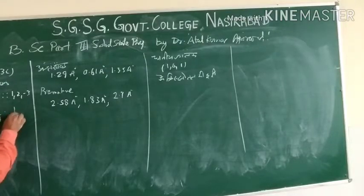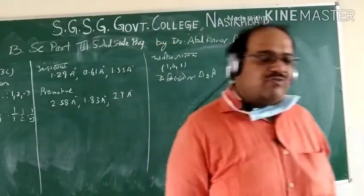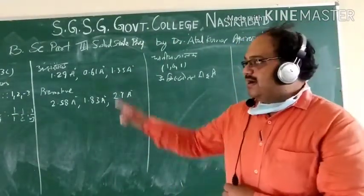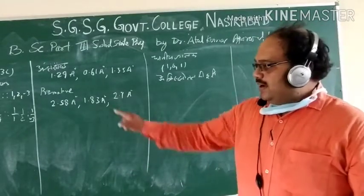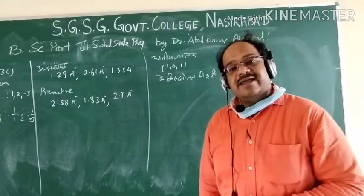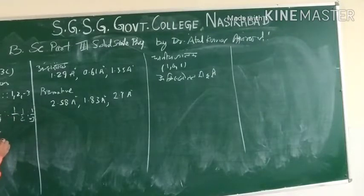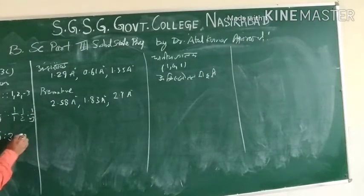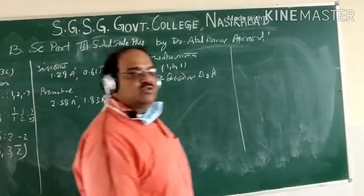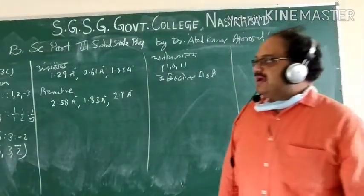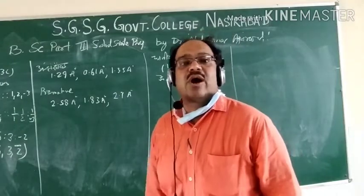Now, for Miller indices, we have to take the reciprocals, so it will come: 1/1, 1/2, and 1/(minus 3). Keep in mind that minus stays as part of the multiple. This is not a whole number, so we take LCM of 1, 2, and 3, which is 6. Multiplying: 6, 3, and 2 bar. Remember, if some Miller indices are negative, we represent them with a bar. So the Miller indices for intercepts A, 2B, and minus 3C are 6, 3, 2̄.